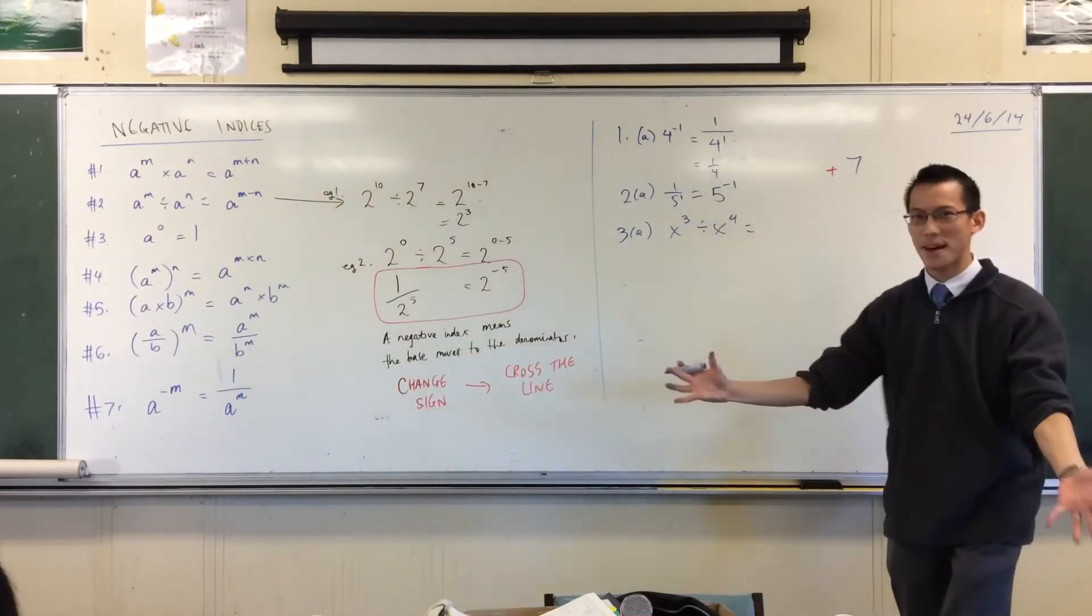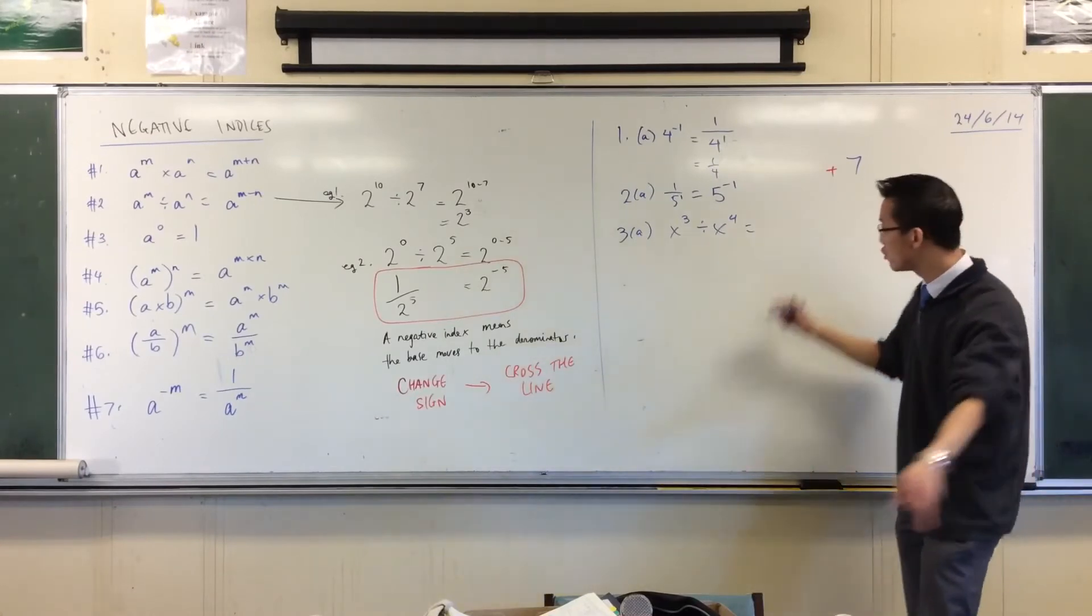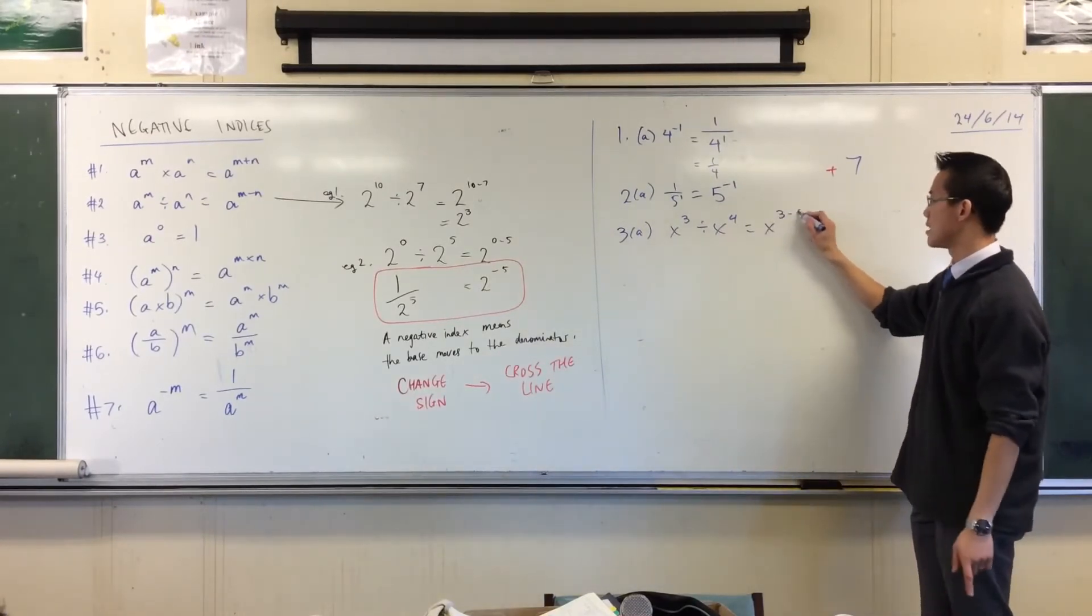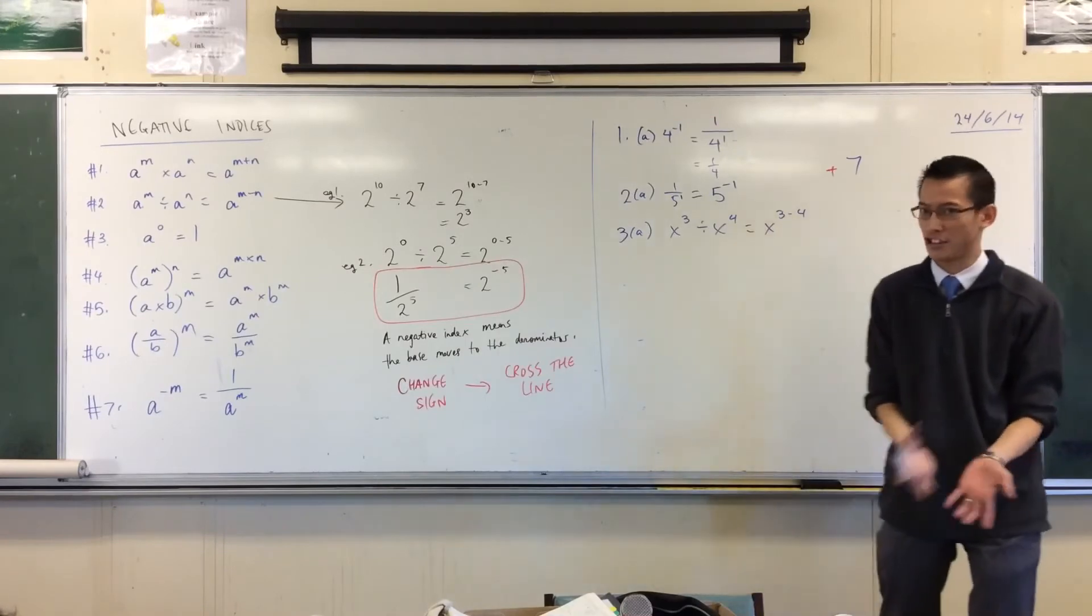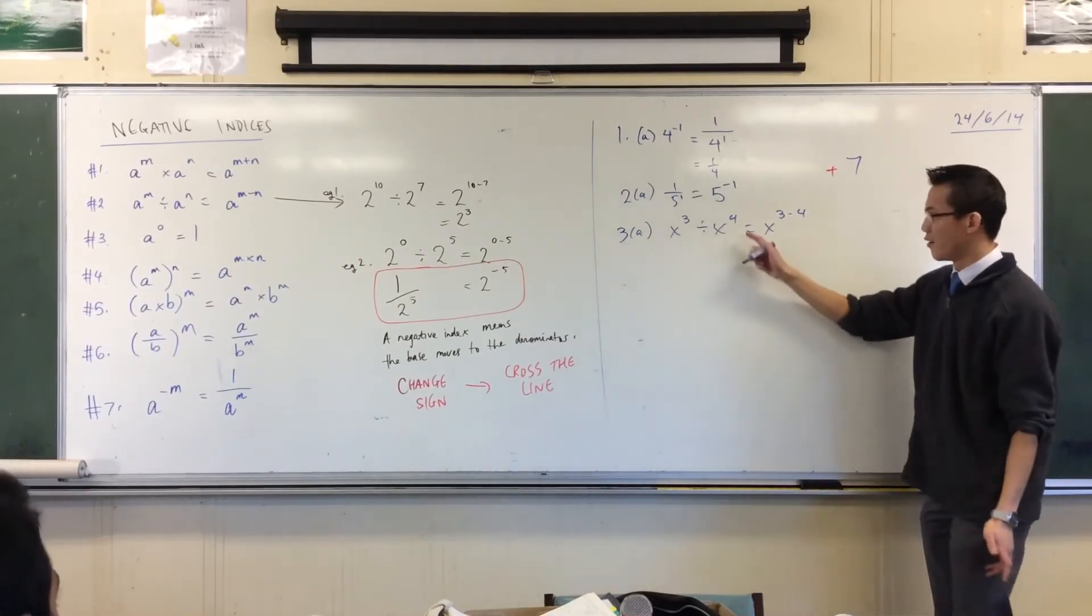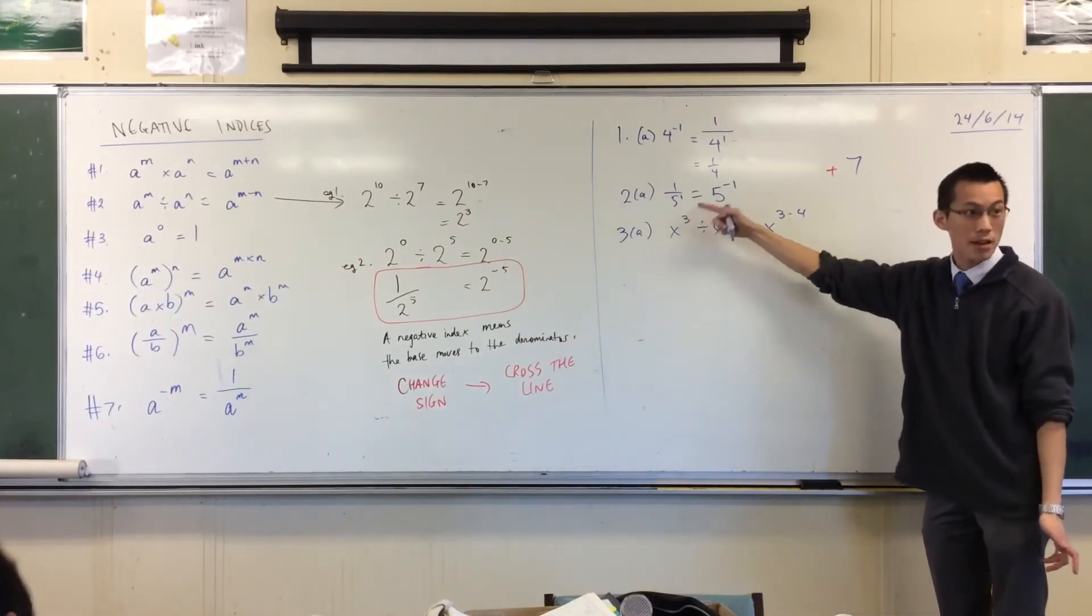When you divide numbers with the same base, what do you do? Yeah, you subtract the indices. Now watch out - subtraction, you can't just do it in any order you like. 4 minus 3 is not the same as 3 minus 4.